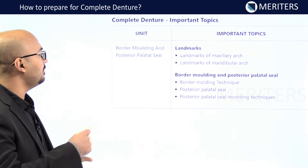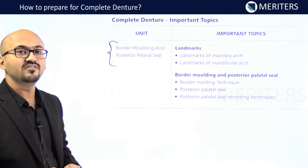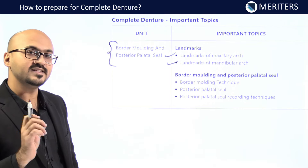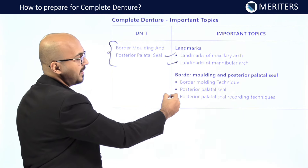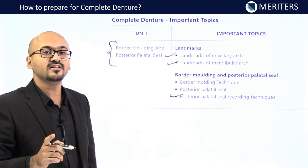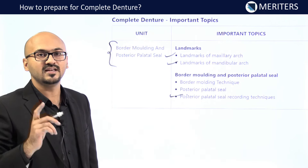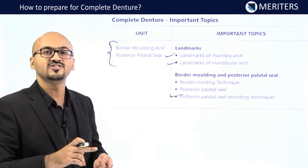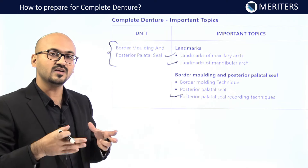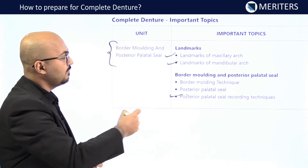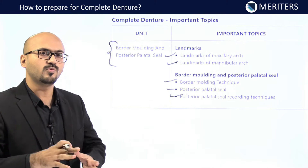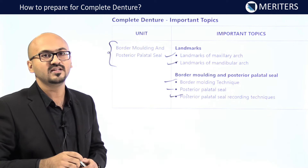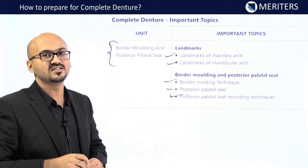Border molding and posterior palatal seal area, along with all maxillary and mandibular landmarks, are well covered in Winkler second edition. Make sure the definition of posterior palatal seal area is updated, as the current Glossary of Prosthodontic Terms has revised definitions for centric relation, articulators, and PPS. Border molding techniques and materials should also be read as they are in the syllabus.